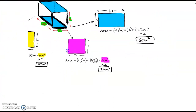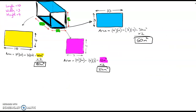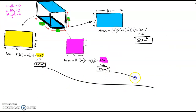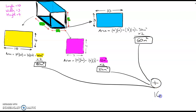So now I have all the areas worked out. To find the total surface area, I add all three answers together: 80 plus 24 plus 60, which gives 164 meters squared. That's the total surface area of that rectangular block.